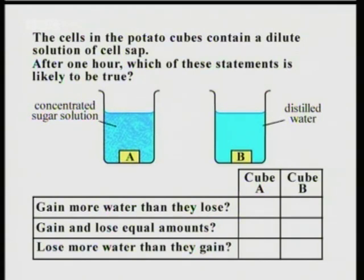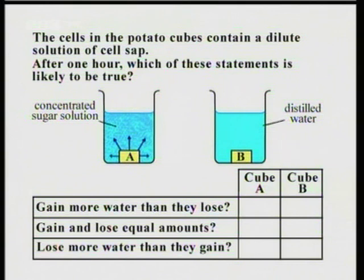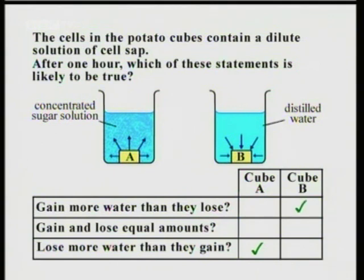This question is about what happens to the water in the potato, so it's about osmosis. During osmosis, water moves from a weaker solution to a stronger solution. Looking at potato A, the concentrated sugar solution contains a lesser proportion of water than the dilute cell sap in the potato, so water will move from the sap into the sugar solution — meaning potato cube A will lose more water than it gains. For potato B in distilled water, water will move from the water into the sap, so potato B will gain more water than it loses.